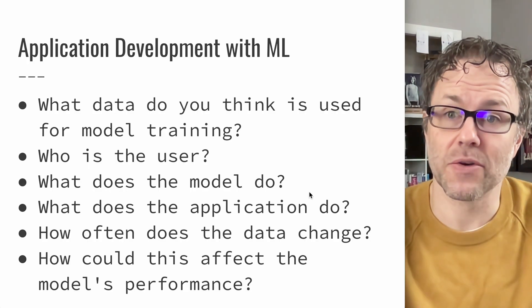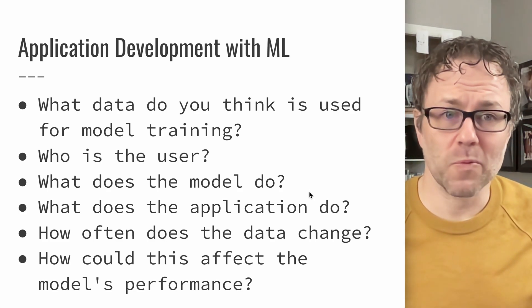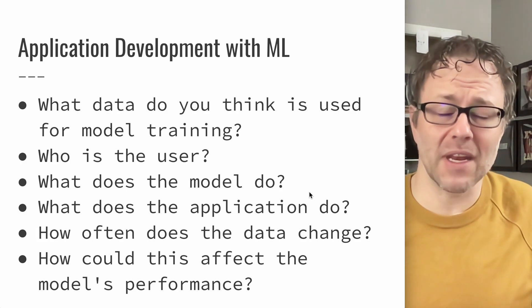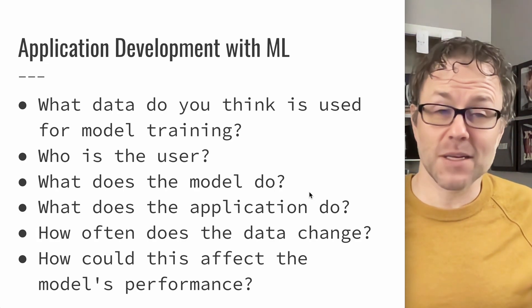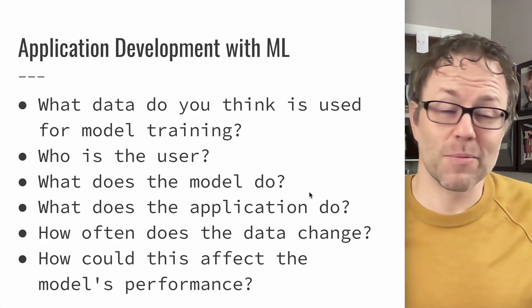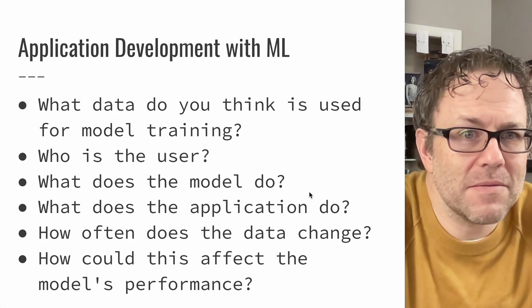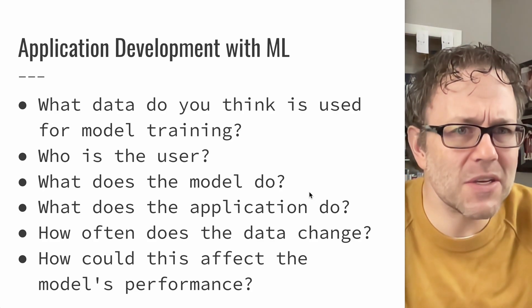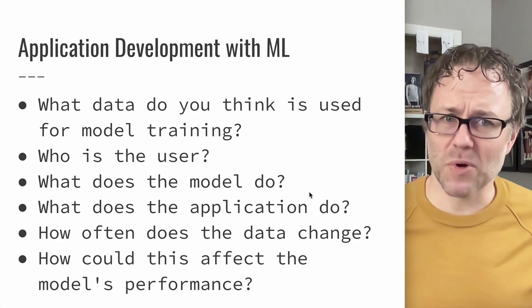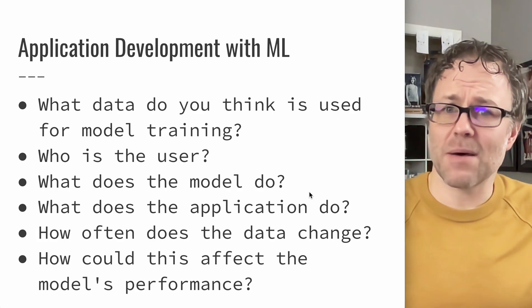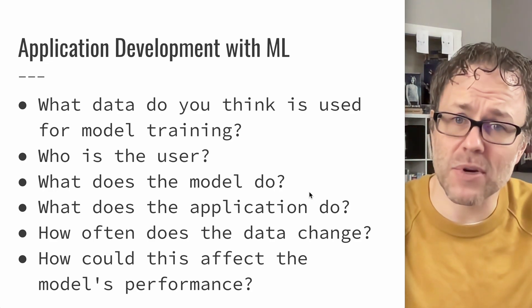If we think about applications that use machine learning, there are some important questions to consider. Many applications use machine learning — from sophisticated capabilities to pedestrian things like Amazon's product recommendations, which likely involve some ML process making recommendations for users based on their profile. So what data is necessary for training, and who is the user? Building a model for your own purposes is different than building one that will mostly be used by an application sending predictions to it.